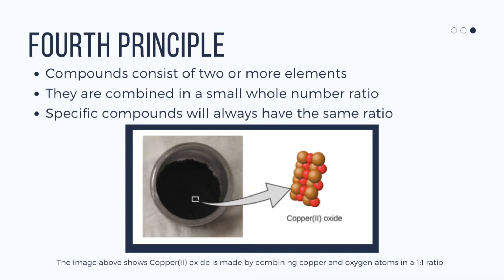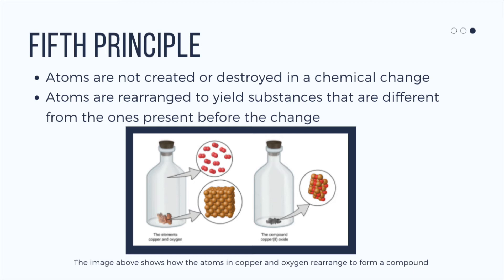The fifth principle: atoms are not created or destroyed in a chemical change. Atoms are rather rearranged to yield substances that are different from the ones present before the change. This is a really important concept — atoms are not created or destroyed, but rearranged to yield different substances.